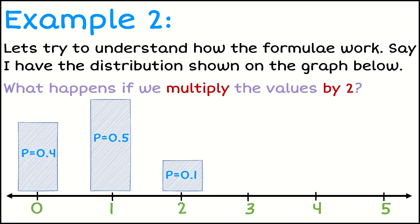Let's actually have a look at a couple of real examples here. I've got a distribution with three outcomes: getting a zero, getting a one, getting a two. Each of these have a probability and I've written those on the bars. The probability of getting a zero is 0.4, the probability of getting one is 0.5, and the probability of two is 0.1.